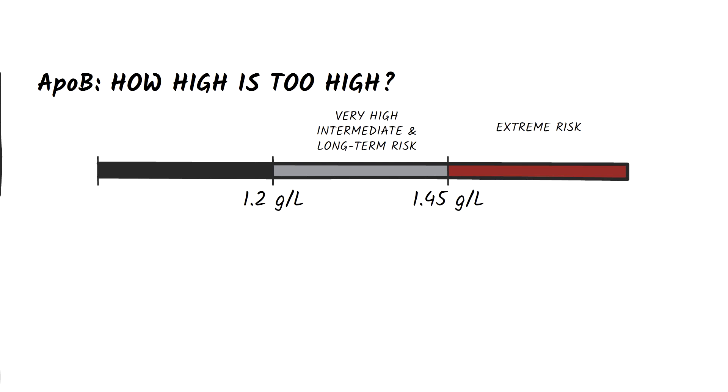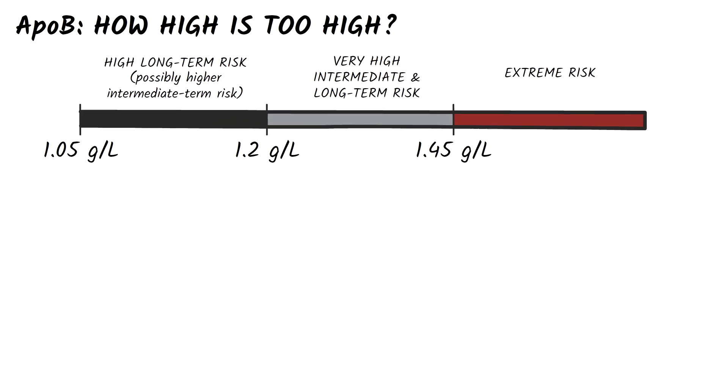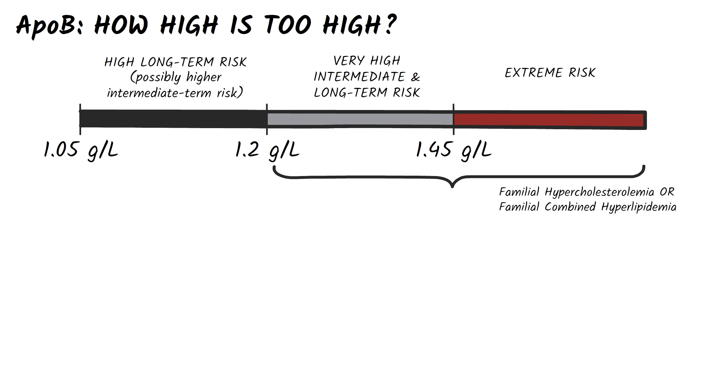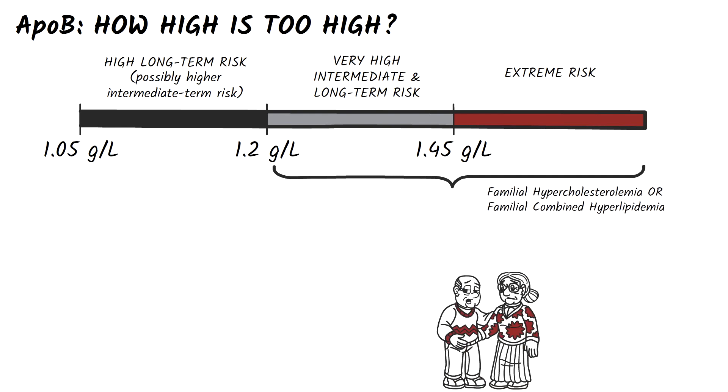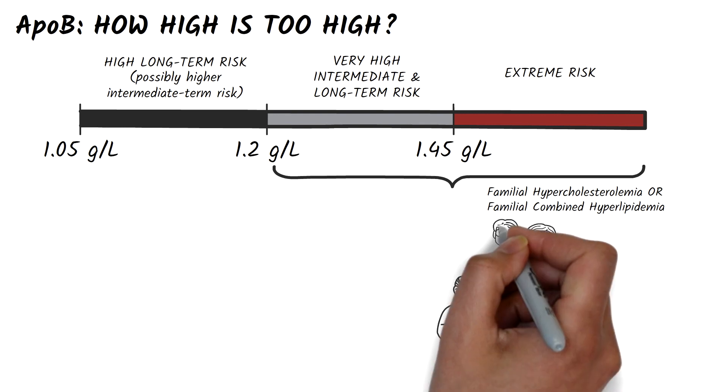And finally, a patient whose ApoB is between 1.05 grams per liter and 1.2 grams per liter is considered at high long-term risk and might be at higher intermediate term risk. If your patient falls in either of the first two categories, you may be looking at a case of familial hypercholesterolemia or familial combined hyperlipidemia.